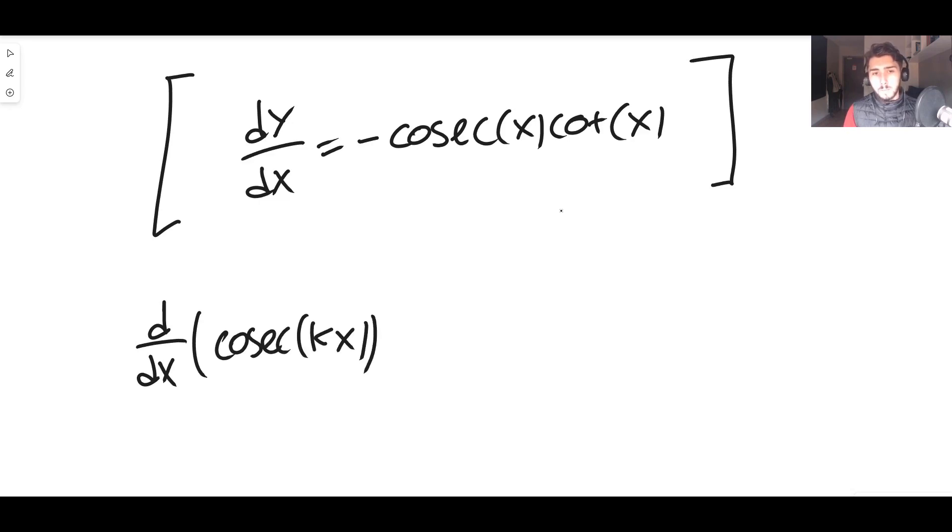Using the chain rule again, instead just letting u equal sine of kx instead of sine of x, you end up with minus k times cosec(kx)cot(kx). This just comes from the chain rule.